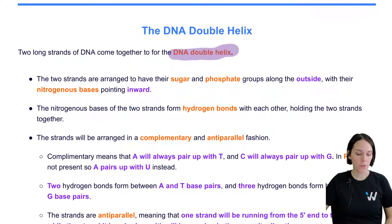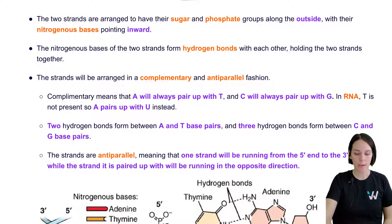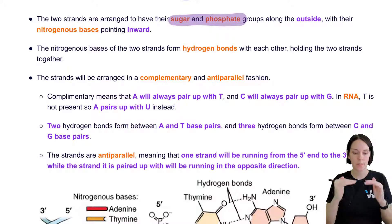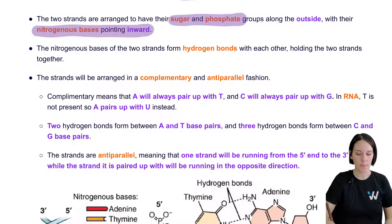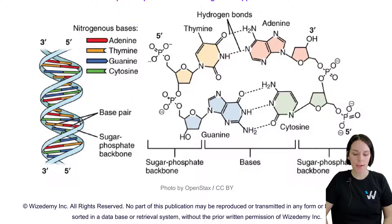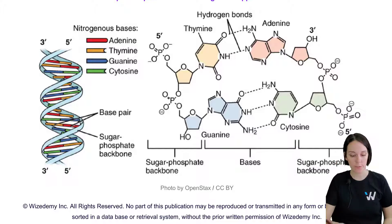We have these two strands of nucleic acids that are going to come together, arranged so that they have their sugar and phosphate backbones along the outside with their nitrogenous bases pointing inward, and this forms a ladder sort of structure. Looking at our diagram, we have four nucleotides — two chains of two nucleotides that have come together to form this ladder structure.